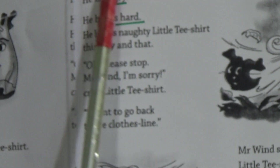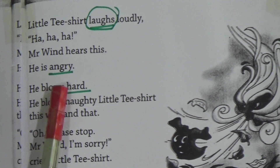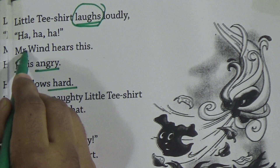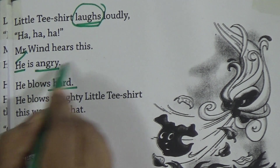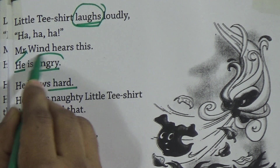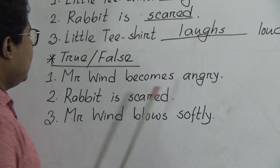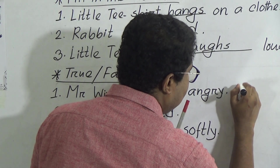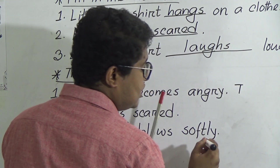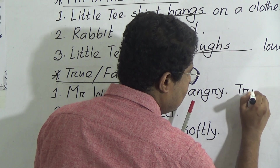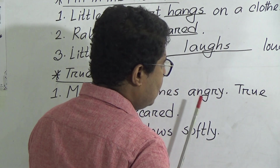Next, true/false. Number one: Mr. Wind becomes angry — true or false? Let's go to the text. 'Mr. Wind hears this, he is angry.' In this sentence 'he' is a pronoun referring to Mr. Wind. So he is angry, that means Mr. Wind is angry — this is true. In the exam, you must write the full word: true, T-R-U-E. Mr. Wind becomes angry — true.